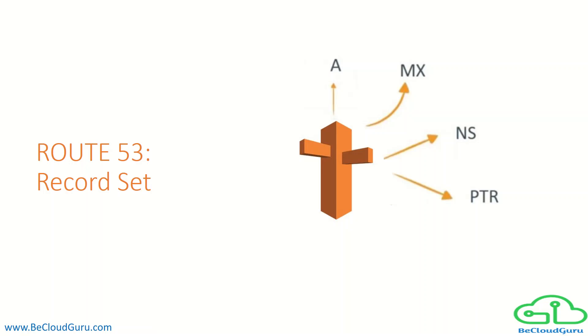The PTR record, or reverse lookup pointer record, is a host record that associates an IP address with the fully qualified domain name of a host. It is normally used in reverse mapping.